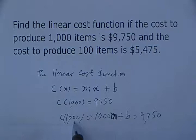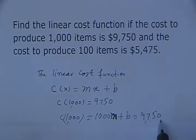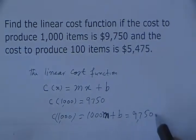So x is 1000, C of 1000 is 1000m plus b, which equals 9750. So this is our equation. Let me call it equation number one.